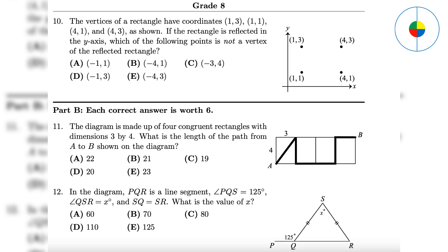Question 11: If you know the Pythagorean theorem, you know the answer is 5 plus 4 plus 3 plus 3 plus 4 plus 3, which equals 22.